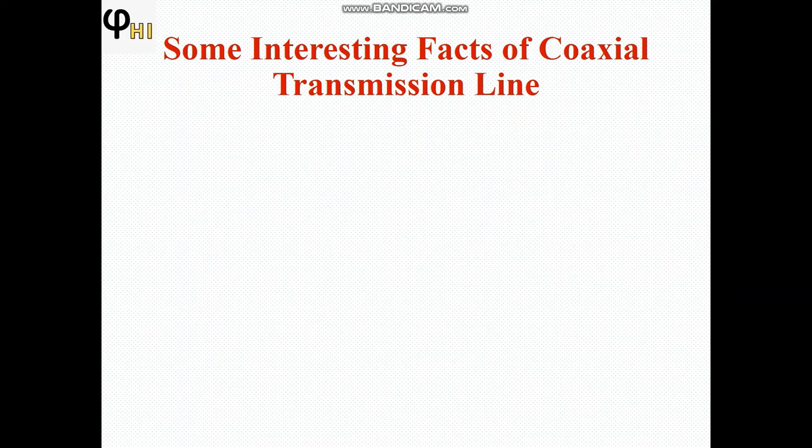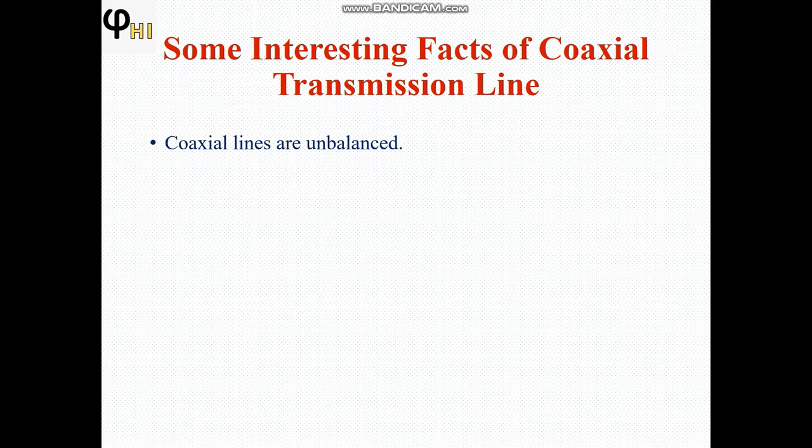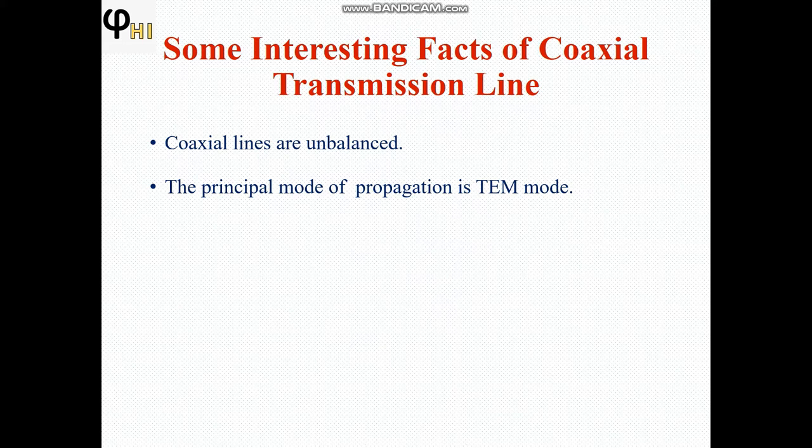Today we will discuss some interesting facts of coaxial transmission lines. Coaxial lines are unbalanced transmission lines because the inner conductor and outer conductor have different impedances. The principal mode of propagation in the coaxial transmission line is the transverse electromagnetic mode.